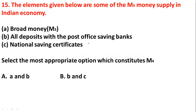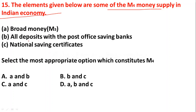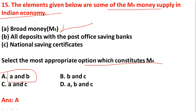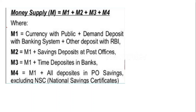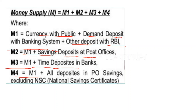Question fifteen: which elements constitute M4 money supply in the Indian economy? The answer is both A and B — broad money M3 and all deposits with the post office savings banks. For reference: M1 = currency with the public + demand deposits with banking system + other deposits with RBI; M2 = M1 + savings deposits at post office; M3 = M1 + time deposits in banks; M4 = M3 + all post office savings deposits including National Savings Certificates.